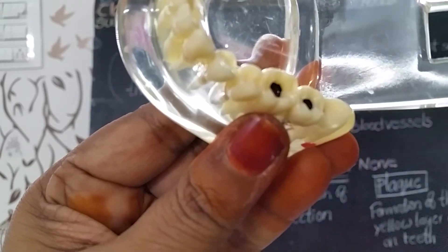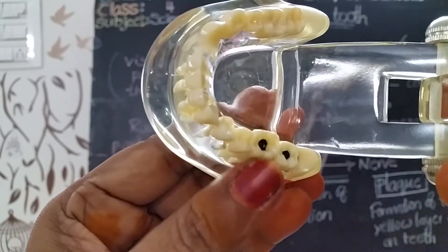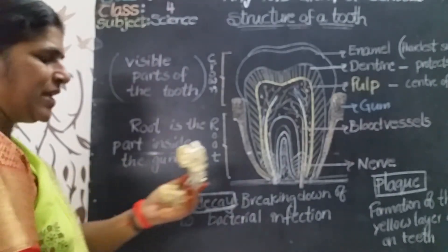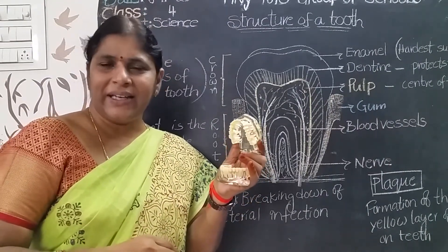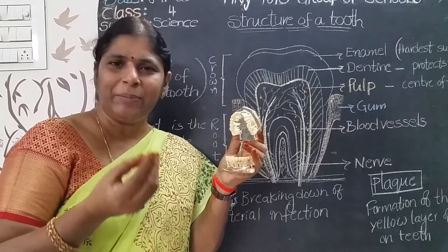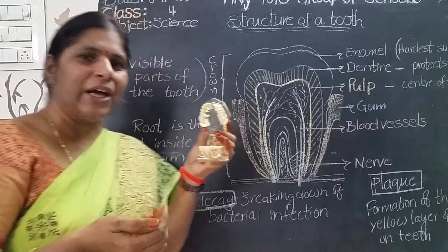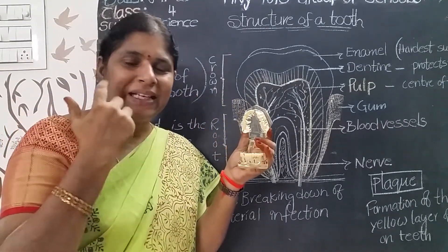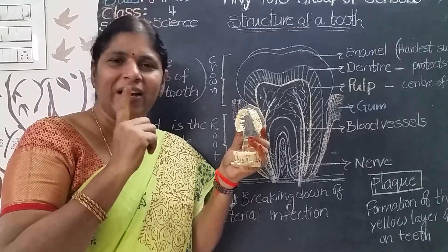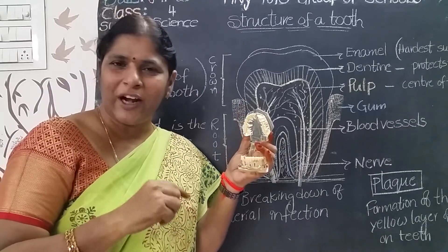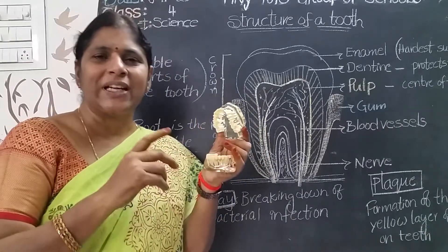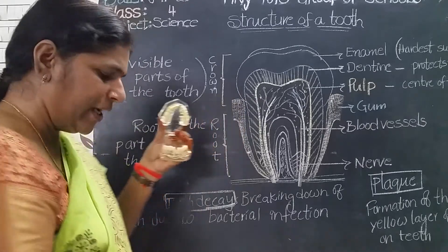If holes and cavities form on the teeth, the doctor will use cement to apply on the surface of the tooth. Tooth decay means the breaking down of teeth. What is plaque? A yellow sticky layer of germs formed on the surface of the teeth is called plaque. Plaque damages the dentine, finally reaches the pulp, and causes holes and cavities to form — that is called tooth decay.